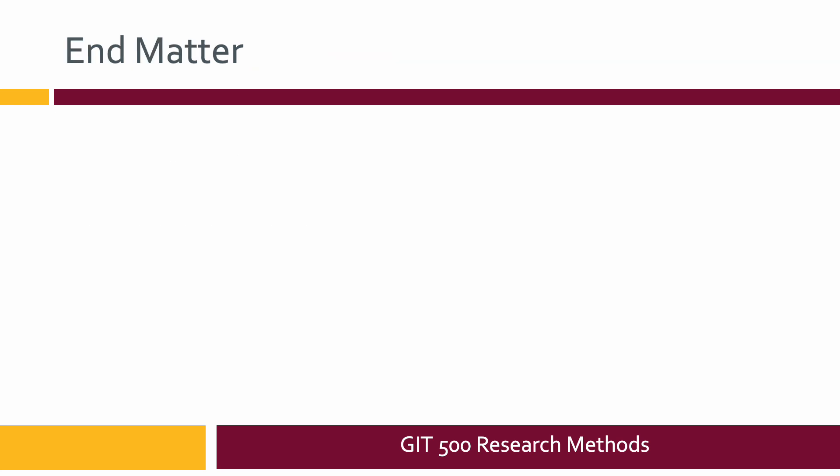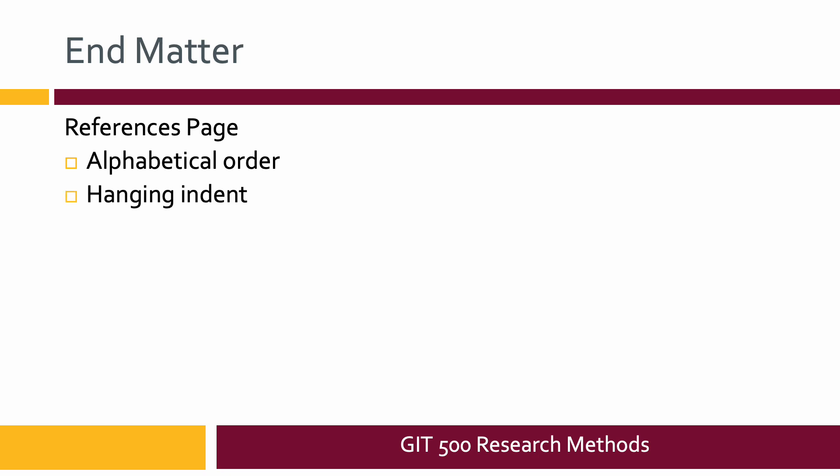At the very end of the paper you have what we call end matter. The first is a references page — list sources in alphabetical order, double-spaced all the way through. Each entry needs to be formatted with a hanging indent: the first line is justified left, and every other line in that entry is indented about five spaces. Google it if you're confused. It must be properly formatted in APA style. There should be a help guide in Canvas, and you can also go to the Purdue OWL site — the online writing lab we talked about before.